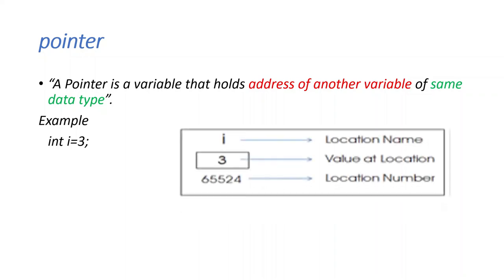For example, i is assigned with 3. i is assigned with location number. Next, 3 is assigned with value of location. Secondly, 65524 is the location number, meaning the address of i. Next, pointer variables.